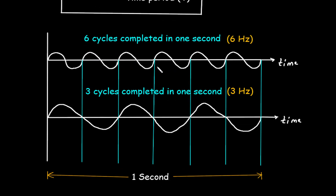Here we can see an example of frequency. From here to here is called one complete cycle. For this waveform there are a total of 6 cycles completed in 1 second, so the frequency of this waveform is 6 hertz. Similarly, here we can see in 1 second there are 3 cycles completed, so the waveform frequency is 3 hertz.